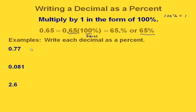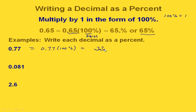Let's do some examples. With 0.77, we're going to multiply by 100%, and the effect is that it just moves our decimal point over two places to the right. So we started with the decimal point there, and it moves over — and we remember to keep that percent symbol. So this is actually equal to 77%.